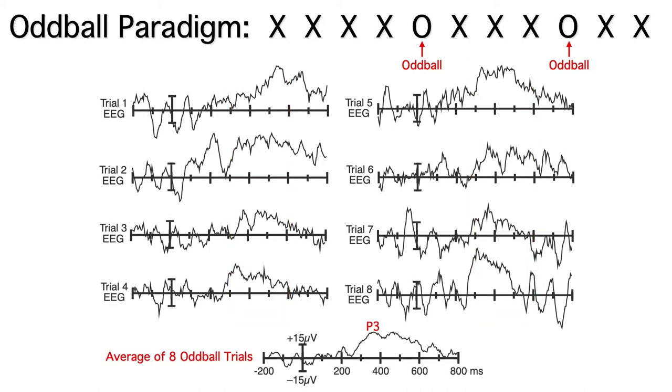Here you can see the average of the 8 oddball epochs. We actually had way more than 8 oddballs, but I wanted you to see what it looks like if you have a small number of trials. You can see the P3 wave, a broad positivity from approximately 300 to 600 milliseconds.